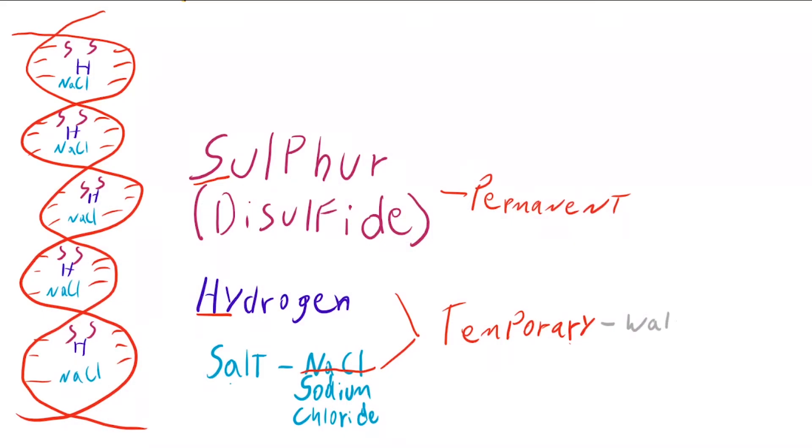We can permanently alter the bond by manipulating the sulfur or disulfide bonds. That's the bond we're manipulating when we're doing perms and relaxers. Each of those works slightly uniquely different, but what is happening is we're manipulating that sulfur bond. We are softening it and in some cases breaking it and then reforming it to a certain degree in a new shape.